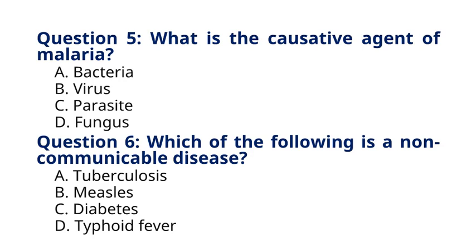Question 6: Which of the following is a non-communicable disease? A. Tuberculosis, B. Measles, C. Diabetes, D. Typhoid fever. The correct answer is option C, Diabetes. Explanation: Diabetes is a chronic non-communicable disease characterized by elevated blood sugar levels due to inadequate insulin production or insulin resistance.